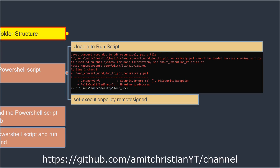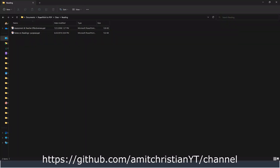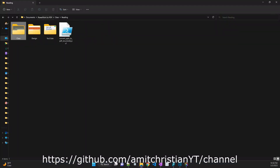So now I have enabled PowerShell script execution on my computer. Once you do that, all you have to do is download the PowerShell script from my GitHub page. I'm going to paste the link in the description of this video and also on the screen, so you can simply copy this PowerShell script from my GitHub page. Once you download it, it will look something like this.